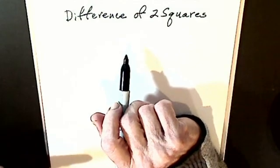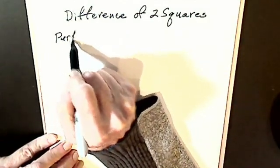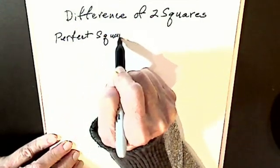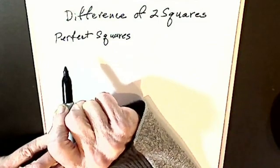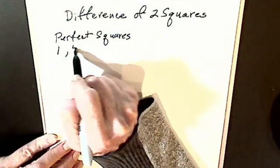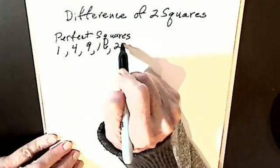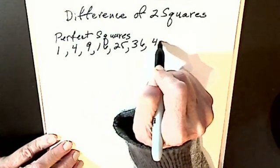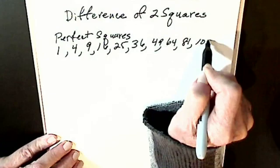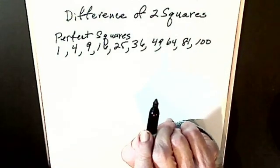First, you have to be able to recognize your perfect squares. A perfect square is a number multiplied by itself. So, we start with 1, 1 times 1, 2 times 2, 3 times 3, 4 times 4, 5 times 5, 6 times 6, 7 times 7, 8 times 8, 9 times 9, 10 times 10. You have to be able to recognize your perfect squares from 1 to 100.